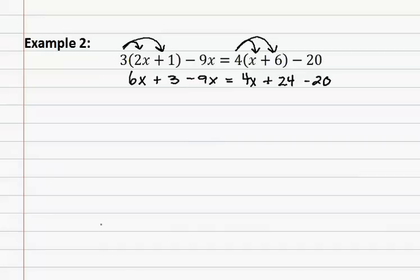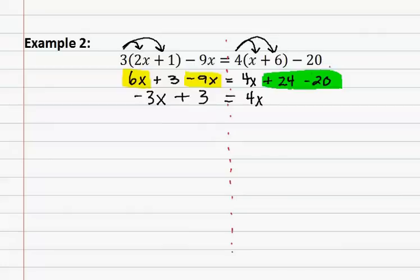When looking at the like terms, we can only highlight those that are on the same side of the equation. Remember, it is helpful to have a dotted line to keep the two sides separate, which means that these two x's can be combined and these two numbers on the other side. When I have 6x minus 9x, I get a negative 3x plus 3 equals 4x, and 24 minus 20 is a positive 4.